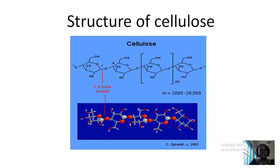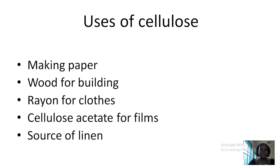So you can see this is a structure of cellulose containing the oxygen, the hydrogen, the oxygen joined to the hydrogen by a covalent bond, and then a chain of cellulose joined to another chain by electrostatic force of attraction. What are the uses of cellulose? We've seen so many materials made out of cellulose — for example, paper, wood, rayon for clothes, cellulose acetate for films, and linen.